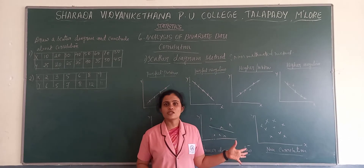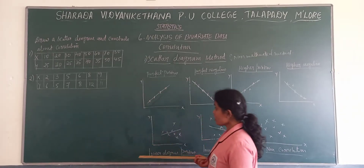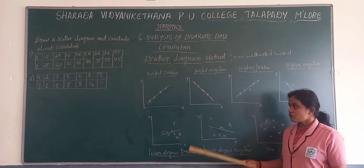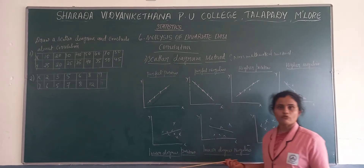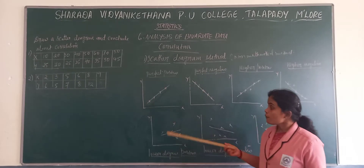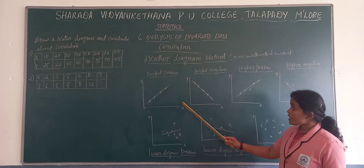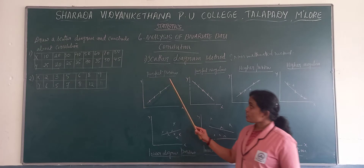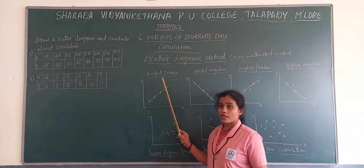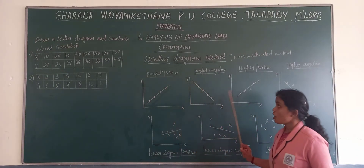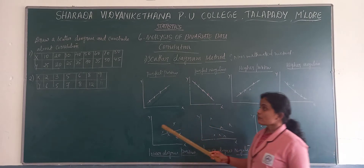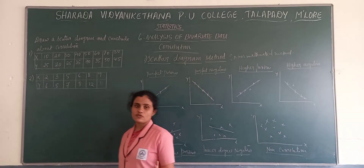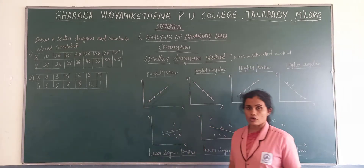These are the types. In the exam, as I said, this may or may not come — it may come for short answer. Based on these types, we should know what the different types are based on the direction. If you know this, then when you draw the scatter diagram, you can name which kind of scatter diagram you have got.